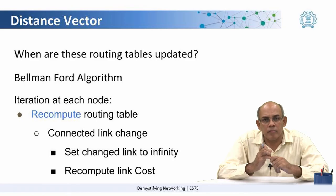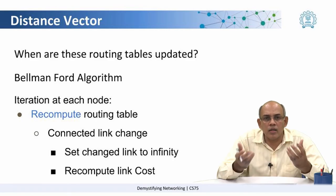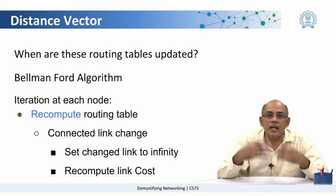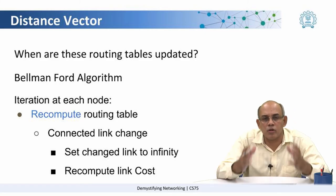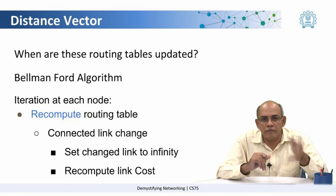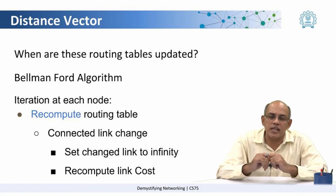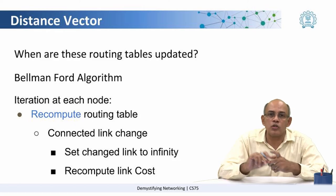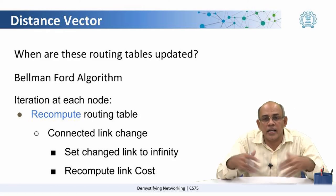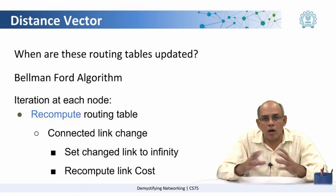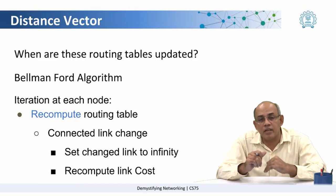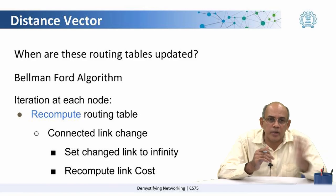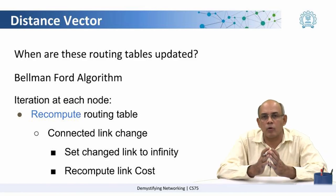Once the change has happened, the Bellman-Ford algorithm recomputes the distance table based on the change. If the link has gone down, then that link cost is set to infinity and the routing table is recomputed. If new information has been received from a neighbor, then that neighbor's information is merged into the current routing table.